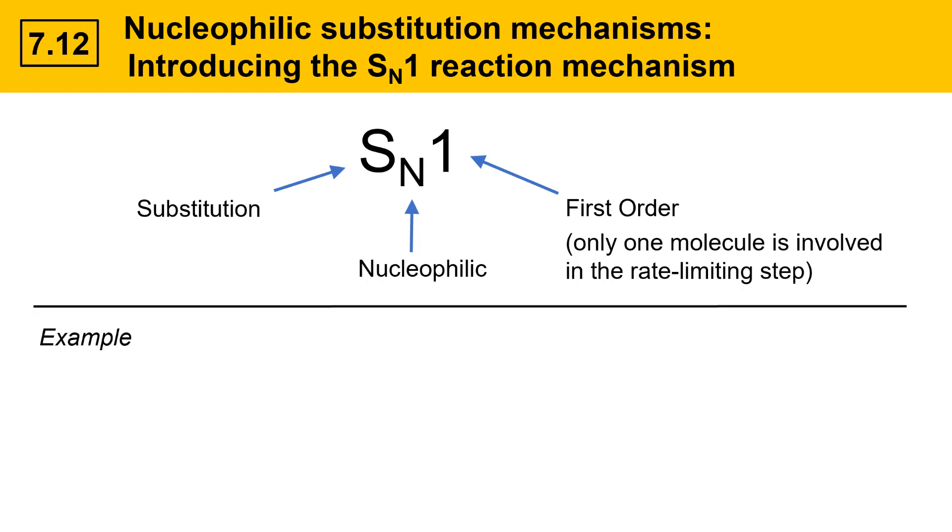Here's an example of a reaction that goes by the SN1 mechanism. We have an alkyl halide here that's tertiary, and a nucleophile here that's weak. These are rather poor conditions for an SN2 mechanism,